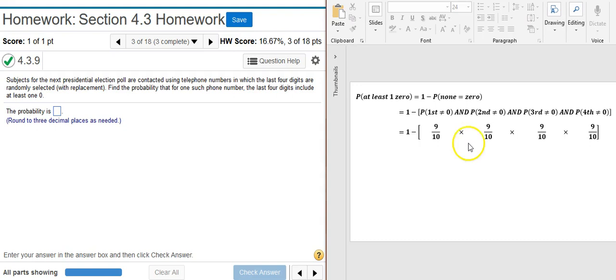Now at this point in the expression we can simplify this because we've got nine-tenths multiplied by itself. There's four of them, so I can actually just simplify that by saying nine-tenths to the fourth power, which when I punch that on my calculator I get 0.6561. Subtract that from one and I get 0.3439.